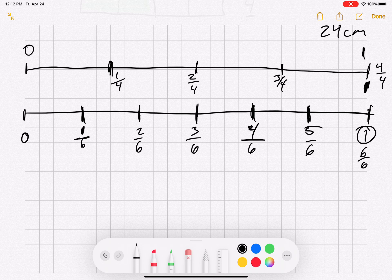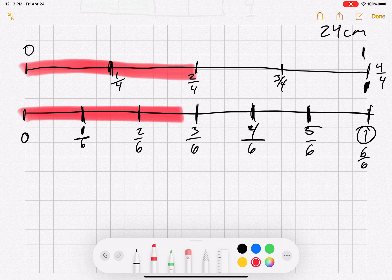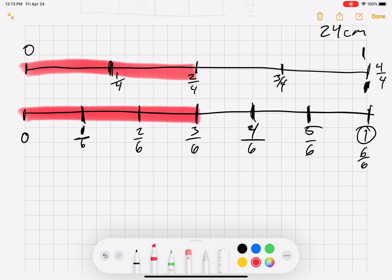So if I'm comparing these two now, I'm going to shade two fourths at the top and three sixths at the bottom. What I want you to notice is that just because they have a different denominator doesn't mean that they're a different number completely.